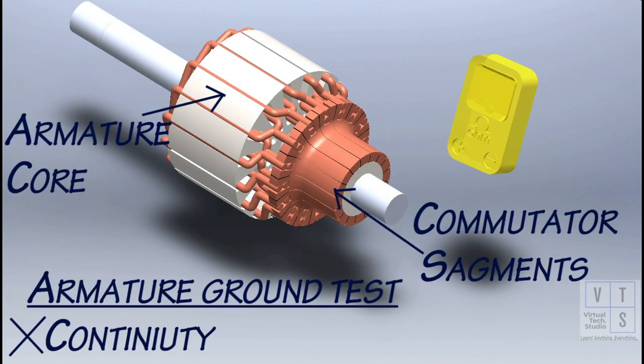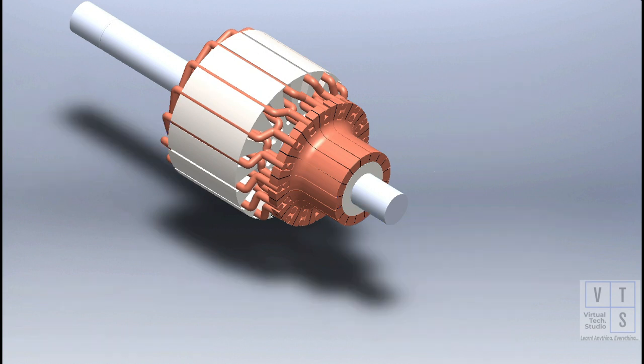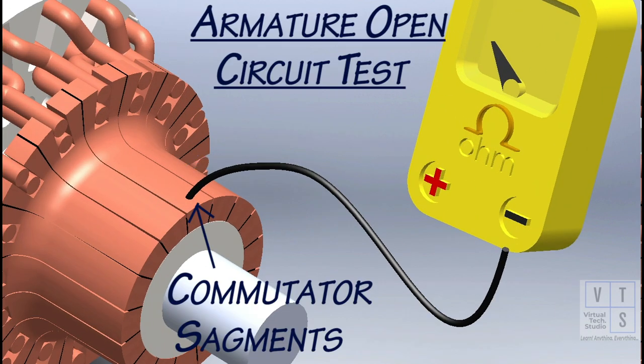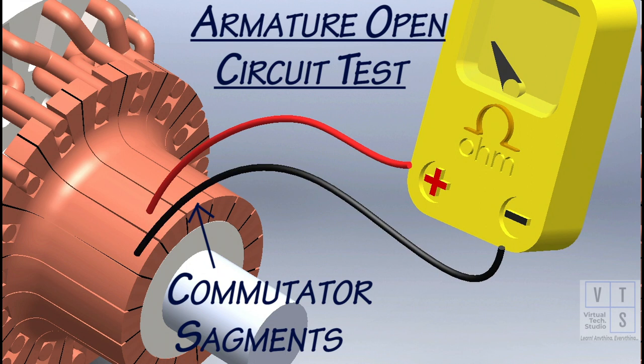Next we will perform armature ground test. Between commutator segments and armature core should be insulated and no continuity should exist. Check for continuity between consecutive commutator segments. If there is no continuity at any test point, there is an open circuit and the whole armature is to be replaced.